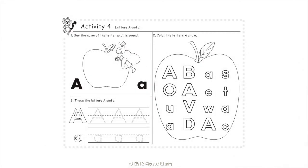Activity 4: Say the name of the letter and its sound. A. Color the letters A and a. Trace the letters A and a.